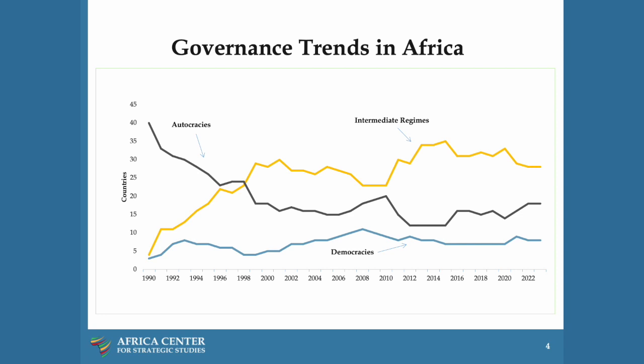This shift towards more democratic governments was accompanied by a two-decade period of really unparalleled growth for the continent. Africa saw continuous positive economic growth up until the pandemic, following two decades of anemic per capita growth. During this time, there was a dramatic reduction in the number of financial crises and instances of hyperinflation, and a drop in the number of coups — a 58% decline over that two-decade period.